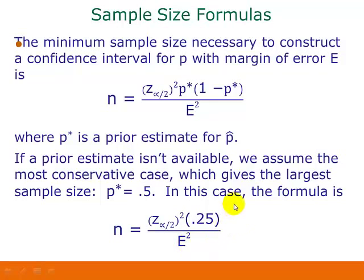One thing to remember when using either one of these formulas is that, since we're talking about proportions, everything has to be in decimals. So that includes the margin of error E. If you're given the margin of error as a number of percentage points, you have to put it in this formula in decimal form.